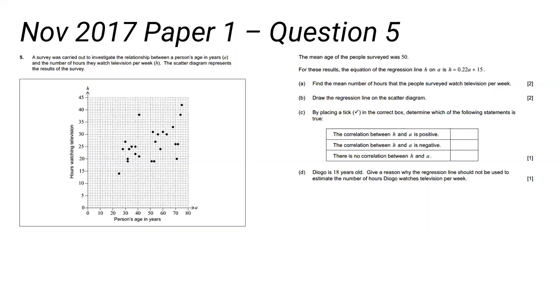It says the mean age of people surveyed was 50. For these results, the equation of the regression line h on a is h equals 0.22a plus 15. The regression line h on a is the mathematically correct way of saying the regression line that calculates h based on a. Find the mean number of hours. The key point they're testing is: do you know that the mean is on the regression line? The mean value must lie on the regression line.